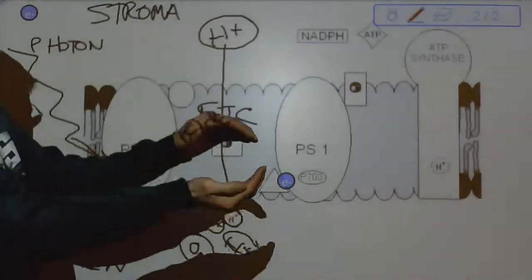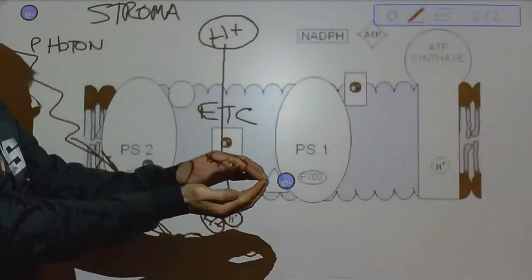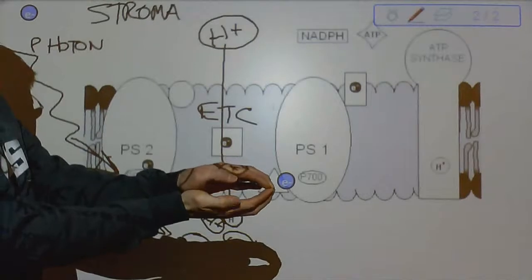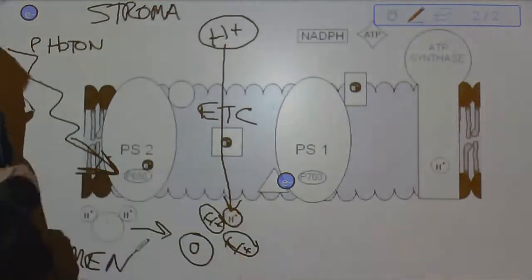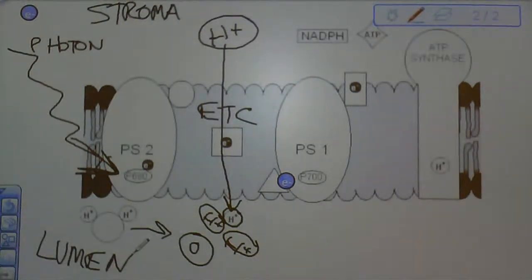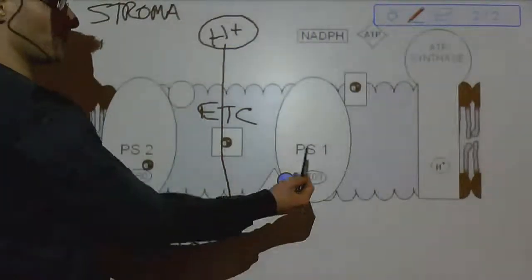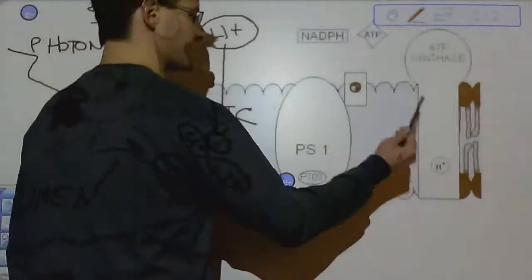You can think of them as two frisbees kind of placed back to back. So a thylakoid, this disc, has membrane, but cut open, it would look kind of like two frisbees. So the inside space here between those two frisbees is called the lumen. All right, then the electron gets to photosystem 1, where it's going to be re-energized by light.